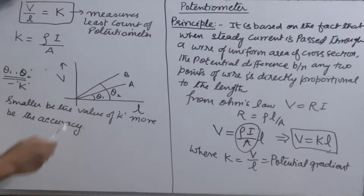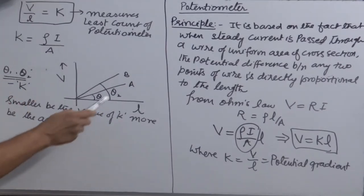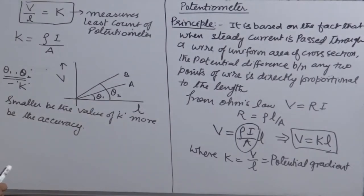Smaller be the slope of the device in a V-L curve, potential difference and length curve, more accurate will be the potentiometer. So A is more accurate potentiometer.